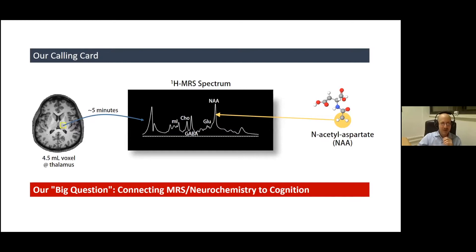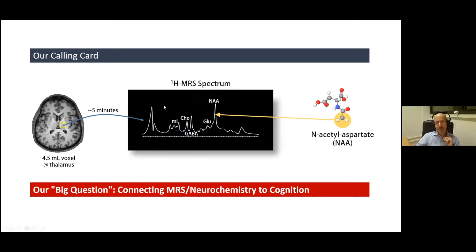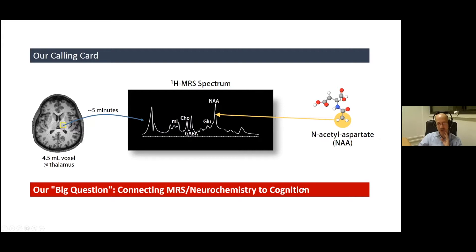I always like to put acknowledgments up front. I'll be talking about this method we've been working on — multi-parametric spectroscopy — which is mostly the work of one PhD student, Alex, and our collaborator Ivan Kirov from NYU. Let me start by giving you a calling card. We're a spectroscopy group: give us a region of a few cubic centimeters in the brain and a few minutes, and we'll produce something like this proton spectrum, where each peak tells you about the concentration of a different molecule or metabolite.